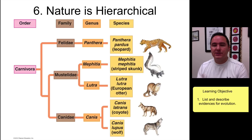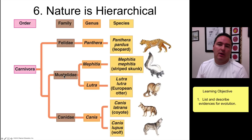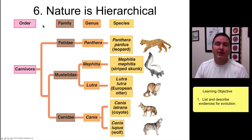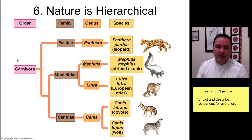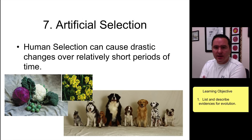Number six: nature is hierarchical. Looking at carnivores, these organisms share many similarities and are organized in a hierarchical structure. This is the best way to organize life, and it was recognized even before Darwin — Carl Linnaeus developed the system of naming things by species, genus, and family. This hierarchical organization is also explained by evolution: a common carnivore ancestor diversified into different lineages that eventually led to all the species alive today.